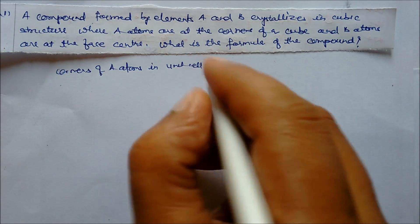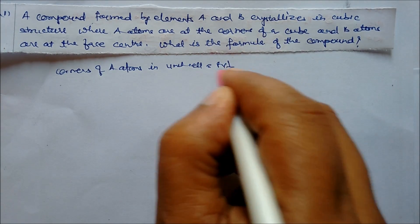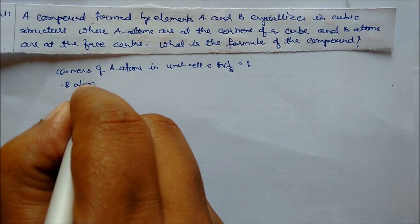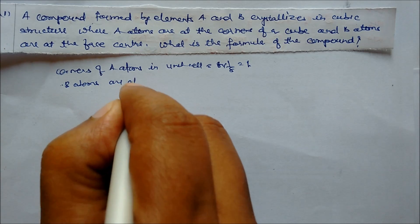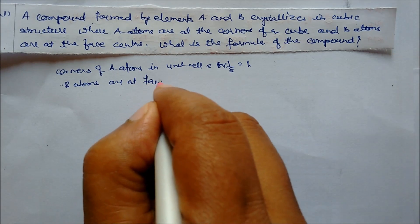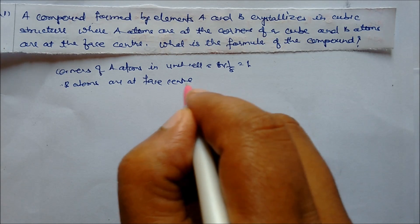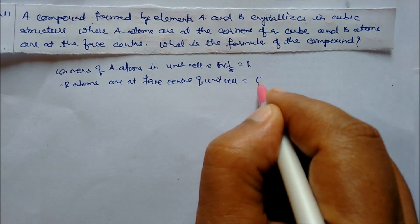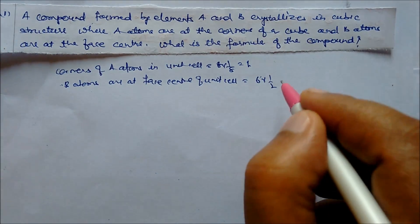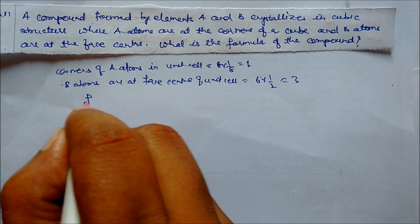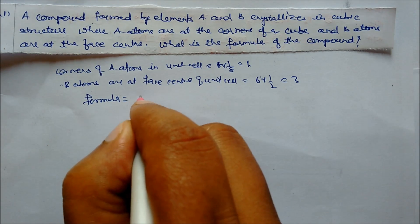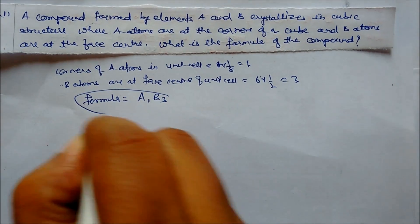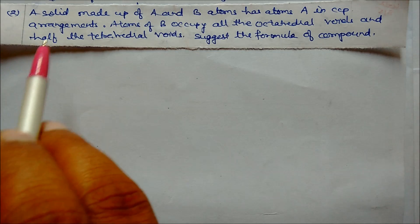So A atoms at corners give 8 × 1/8 = 1. B atoms are at face centers, so the face center contribution is 6 × 1/2 = 3. Therefore, A = 1 and B = 3, giving us the formula AB₃.